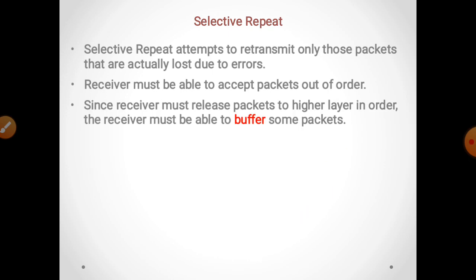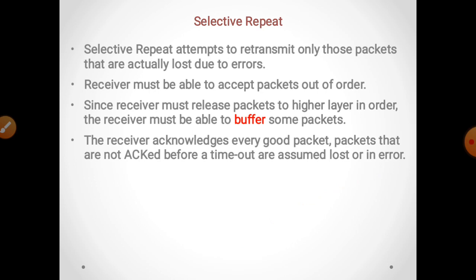Receiver must be able to accept packets out of order. Since receiver must release packets to the higher layer in order, the receiver must be able to buffer some packets. Sender receiver को packet send करेगा, वो acknowledgement send करेगा। अगर उसको sender side से दूसरा packet नहीं मिला तो वो उसे buffer में store करेगा। जो packet पहले आ गया उसका acknowledgement send कर देगा, और जो नहीं मिला उसे buffer में रखेगा और जब मिलेगा तब acknowledgement send करेगा।